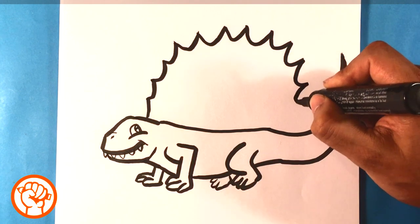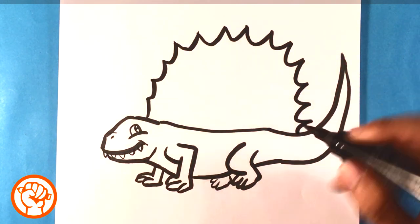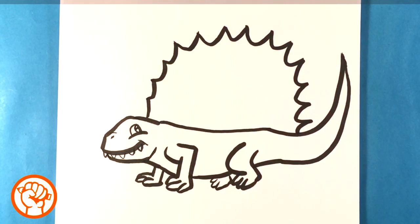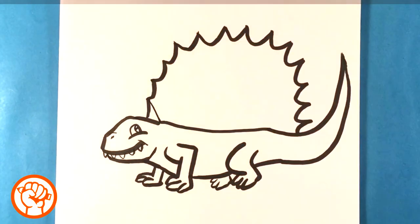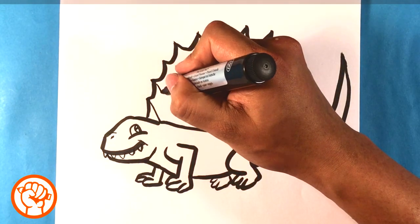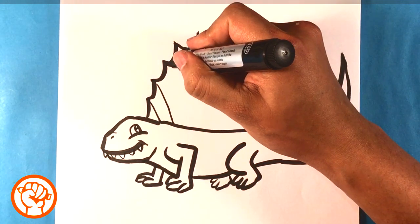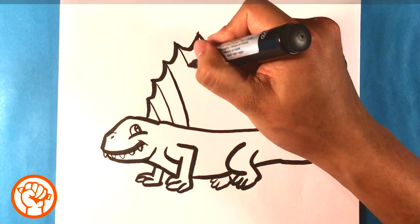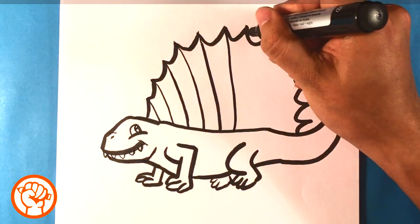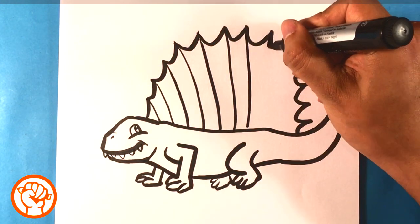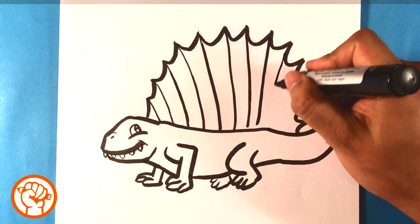You're going to draw lines from each one of those toward down toward the back. For example, right here it's going to have a line straight down. It's like a thin mohawk shape. This stem reminds me of like a feather—think of the middle stem of a feather.